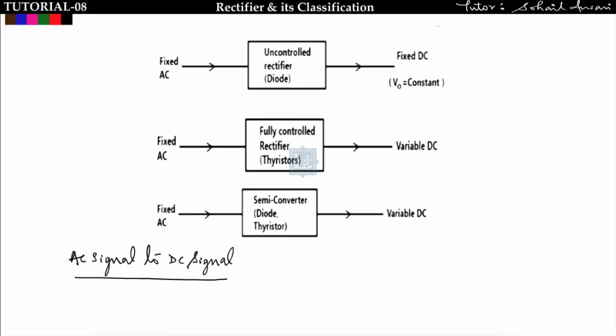I divide rectifiers into three categories: first is the uncontrolled rectifier, second is the fully controlled rectifier, and third is the semi-controlled rectifier. In an uncontrolled rectifier we use a power diode, which is an uncontrolled switch. We use a diode circuit to convert AC to DC, and the output voltage V₀ is constant — we cannot control its magnitude.